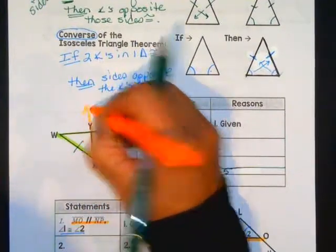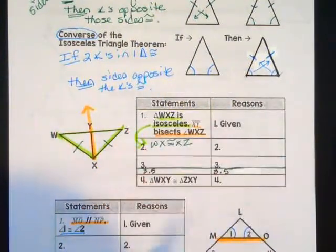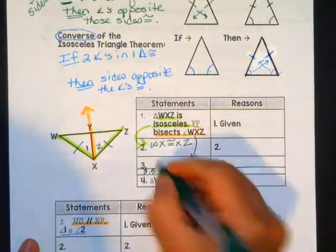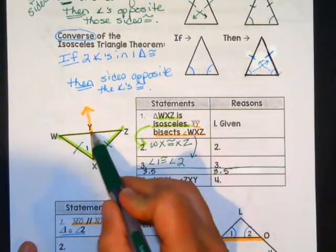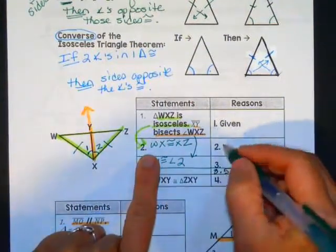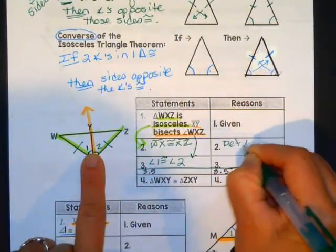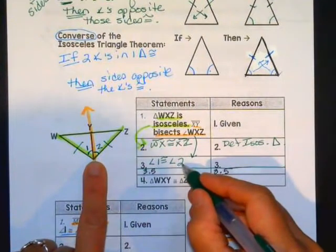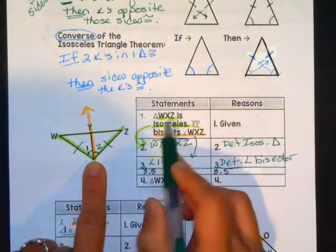It also says XY bisects angle WXZ. So here's XY bisecting the angle. We've talked about this before — when you bisect an angle, you cut it in half. So I put a 1 and 2 here and say angle 1 is congruent to angle 2, or angle WXY is congruent to angle ZXY. I'm missing my reasons. Why do we know those two sides are congruent? That's the definition of isosceles triangle. How do I know angle 1 is congruent to angle 2? That's the definition of angle bisector.